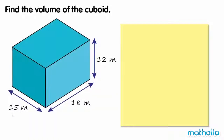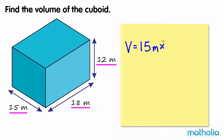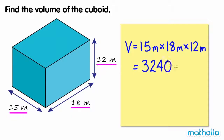Find the volume of the cuboid. Take note of the units — in this case we are working with meters. Multiplying the length by the breadth by the height gives 3240 m³.